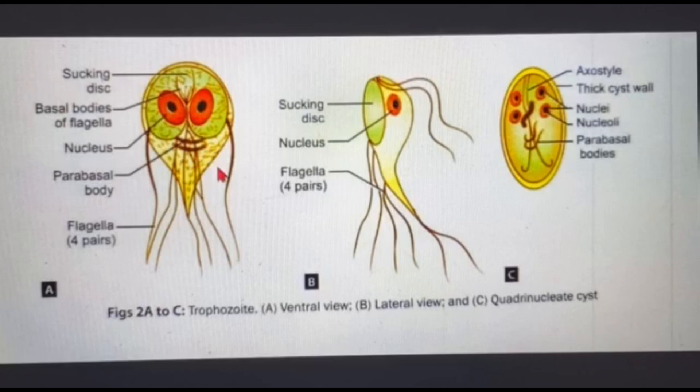If you see in the lateral view, there is a sucking disc. Now this protozoan uses this sucking disc to get attached to the intestinal mucosa. And also one unique point about Giardia is this is the only protozoan that is found in small intestine. The other ones reside in the large intestine.